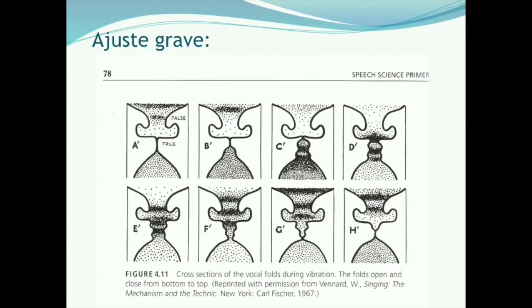El registro grave completo es el que rara vez usamos en la vida cotidiana, pero sí que se utilizan en algunas técnicas, como en el canto difónico. Aquí vemos el acoplamiento del ajuste grave, en el que podemos ver cómo los pliegues vocales se ajustan con bastante grosor y con un mayor nivel de profundidad. Hay más superficie de contacto entre los tejidos externos de los pliegues.